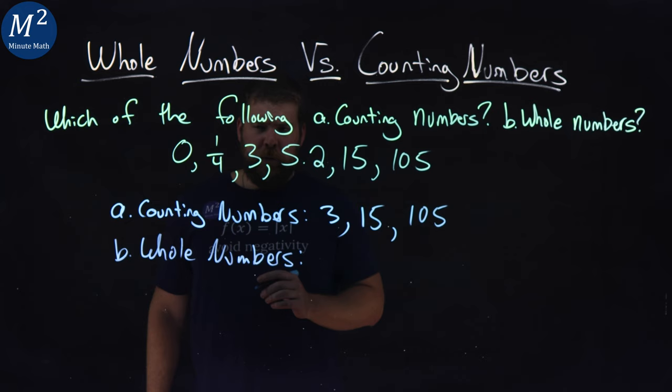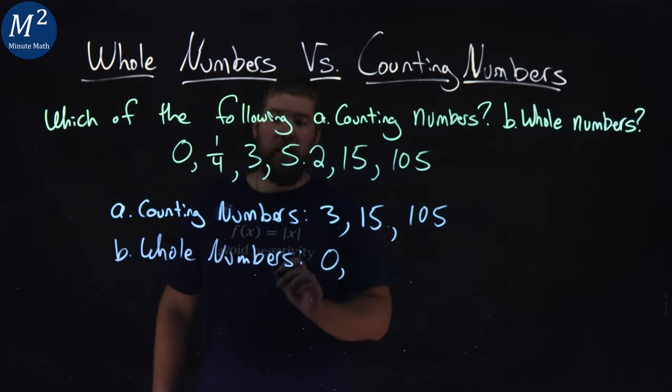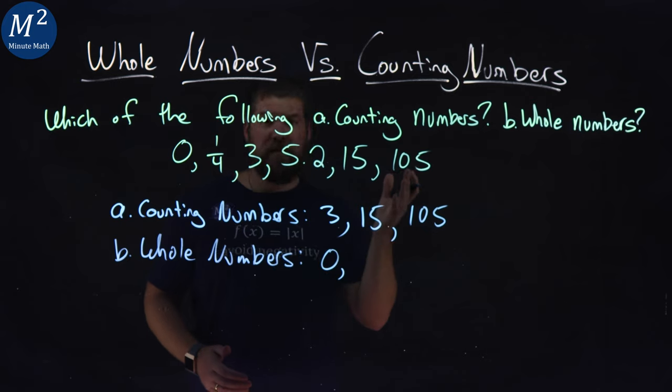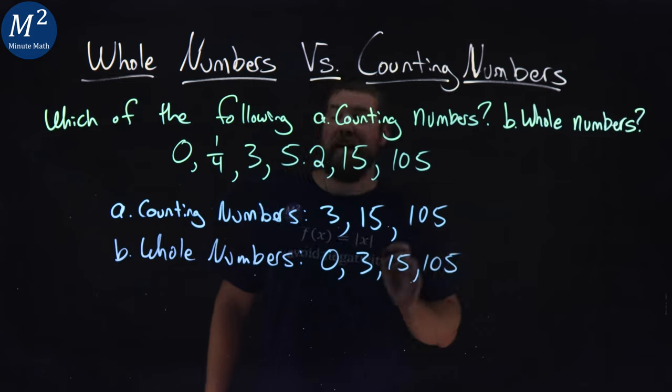Now, the whole numbers. 0, per definition, is a whole number. From there, it's the same as our counting numbers that we have here. 3, 15, and 105.